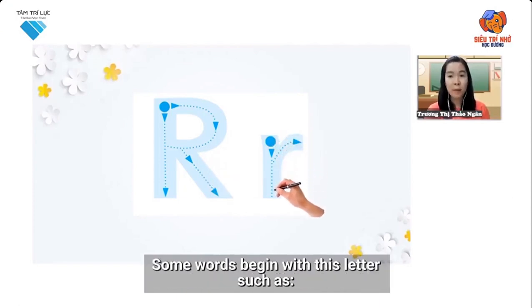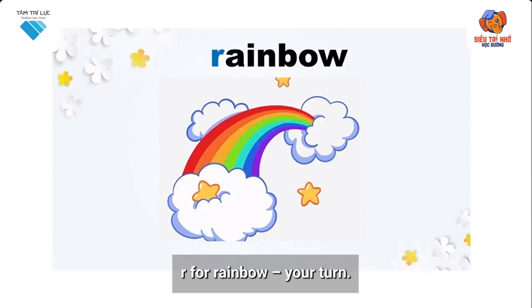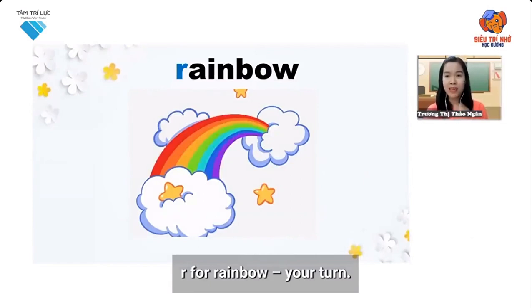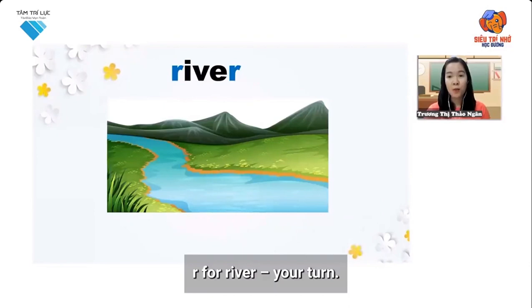Some words begin with this letter, such as: R for rainbow. Your turn. Letter R — R for river. Your turn.